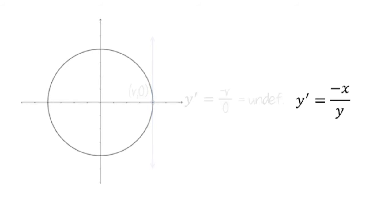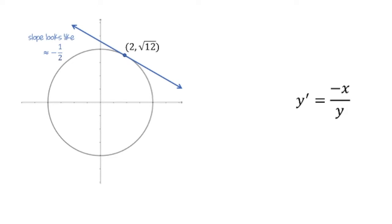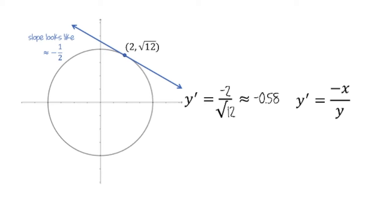Let's look at one more point. How about 2, root 12? This tangent line is not horizontal nor vertical. It looks like it has a slope of roughly negative 1 half. Our formula says that the slope of the tangent line should be negative 1 times x coordinate, so negative 2, divided by y coordinate, root 12. This is roughly negative 0.58. So what we're seeing here is a way to find derivatives and slopes of tangent lines for relations between x and y using the techniques of implicit differentiation.